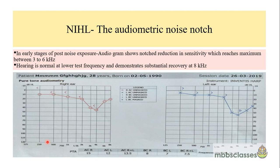This is an audiogram of noise-induced hearing loss (NIHL). In NIHL, an audiometric notch is seen. In early stages, the audiogram shows a notch reduction in sensitivity that is maximum between 3 to 6 kHz. The type of hearing loss is sensorineural, with the AB gap less than 15 dB. The frequencies involved range from 3000 to 6000 Hz, and at 4k Hz we generally see a dip. There is also a recovery at 8 kHz, as shown in the audiogram of both ears.